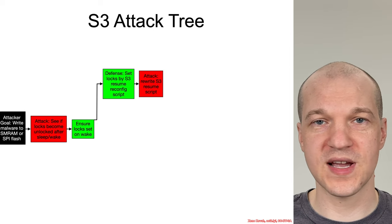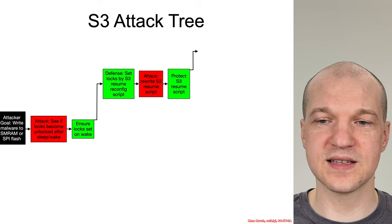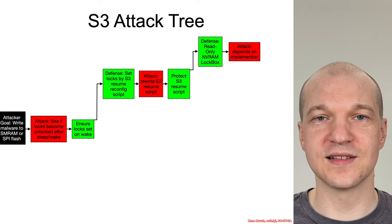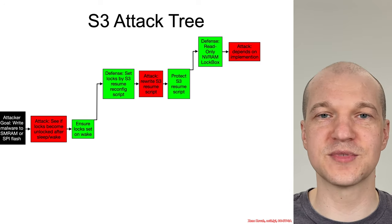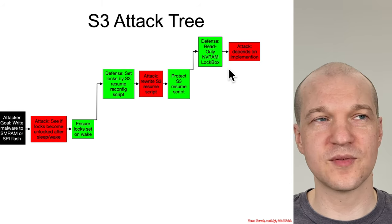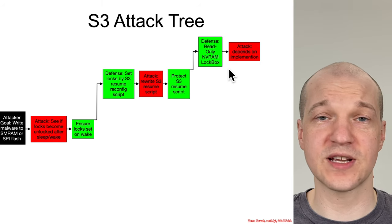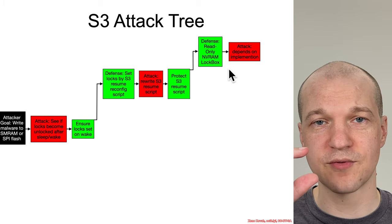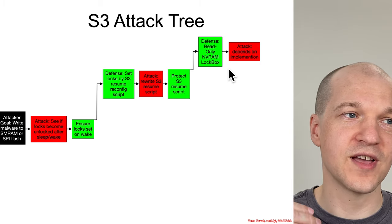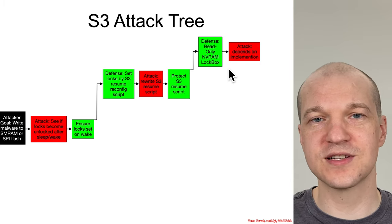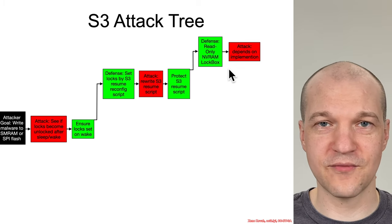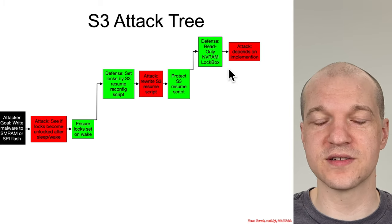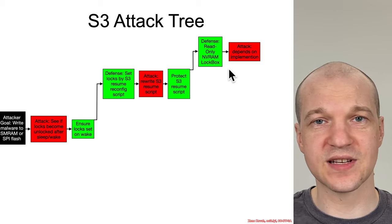So if the attack is rewriting the S3 resume script, the defense is to protect the S3 resume script somehow. Of the options listed, they basically say go do it somehow — it's up to you. Examples are read-only in NVRAM. I could imagine that working via using protected range registers to take some chunk of memory, write to NVRAM, and cover it with a protected range register if you have any left — so that Darth Plagueis cannot just come in and write to it.